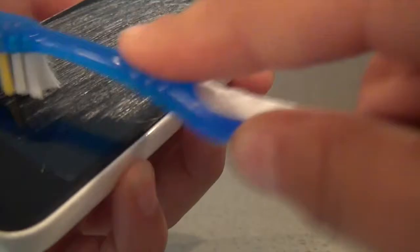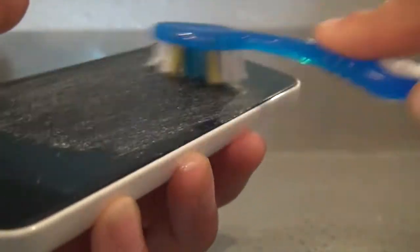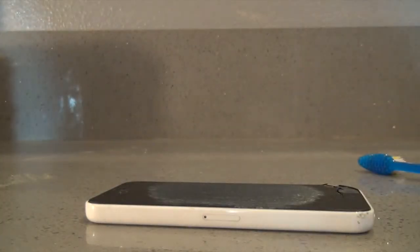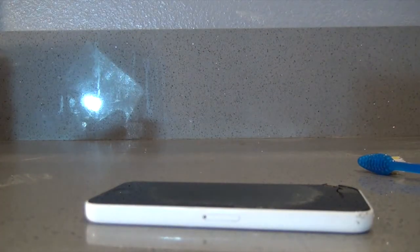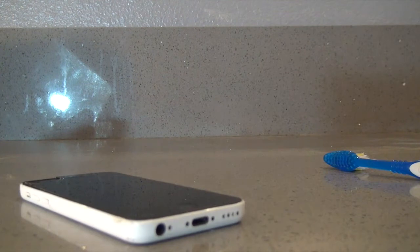Now you get some toothpaste, put a tiny bit on a brush, and then put it on your device. It smells good. Keep rubbing it in. That's the toothpaste. Now get a cloth or towel and just rub it in. Now wipe it off with your shirt if you want. You can add a tiny bit of water.